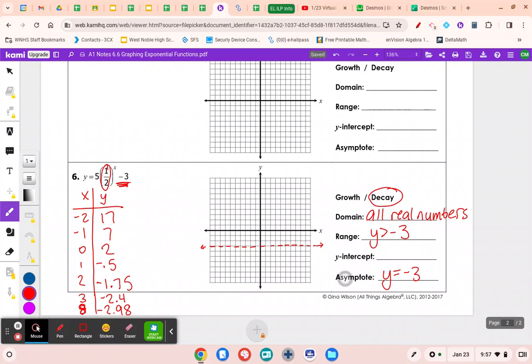Let's graph it. The negative 2 up 17, we can't really graph. Negative 1 up 7, we can though. 0 up 2, that's our y-intercept, over 0 up 2. This guy right here. Then we have 1, negative 0.5. 2, negative 1.75. 3, negative 2.4. 8, we skip down. Negative 2.98. So we have an exponential graph here. Never touches the asymptote. Doesn't cross it either. I know it's kind of hard to draw. Looks like mine does cross, but just do your best.